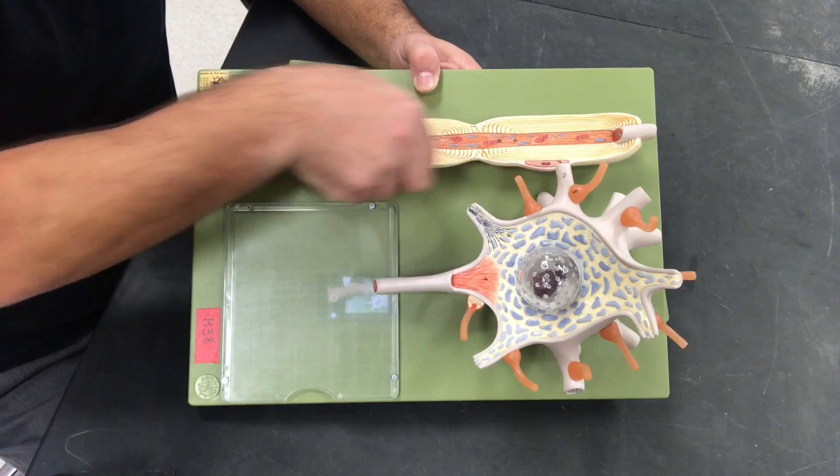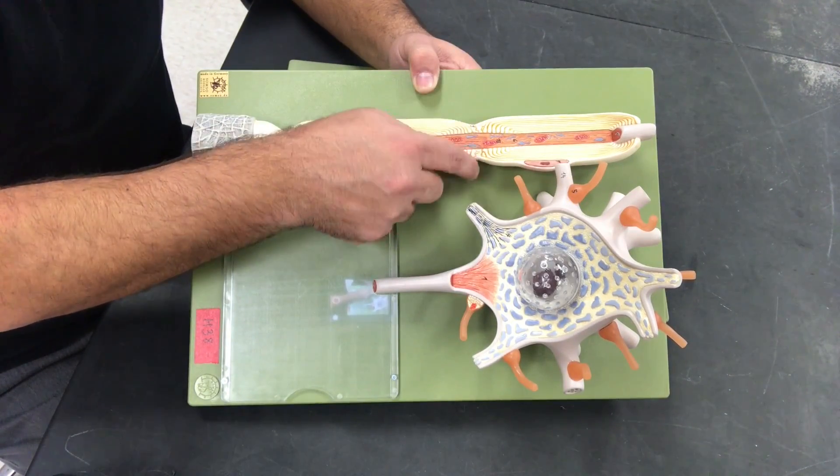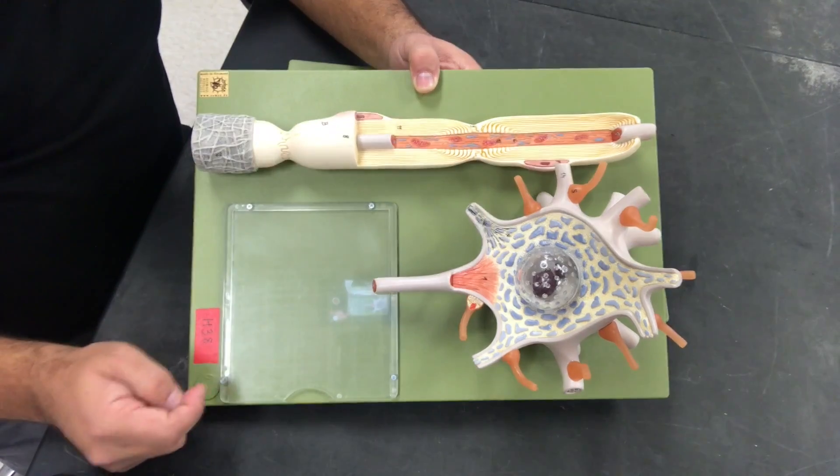Where each Schwann cell meets we're going to have a little exposed axon. This is known as our node of Ranvier.